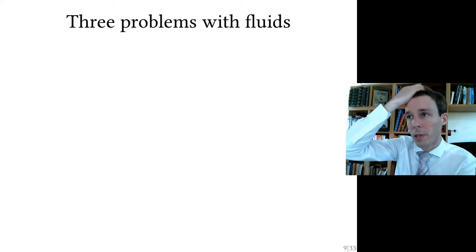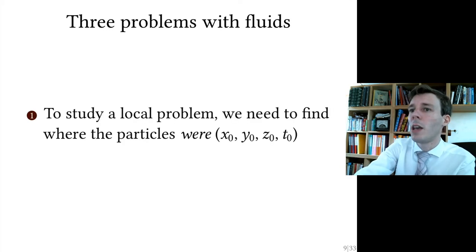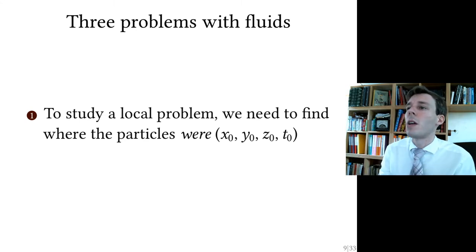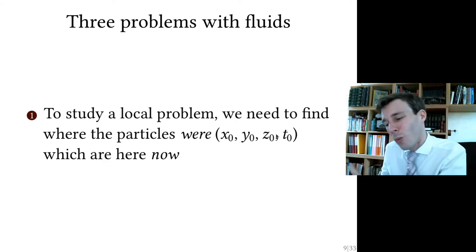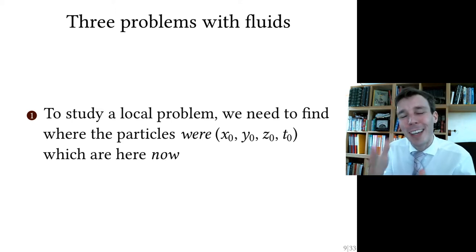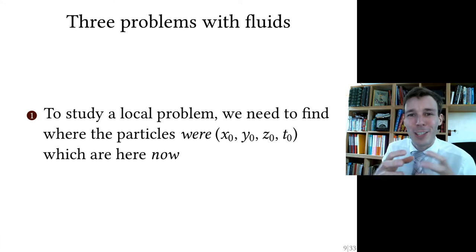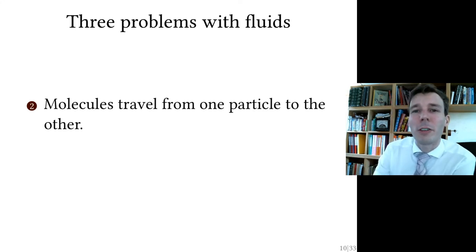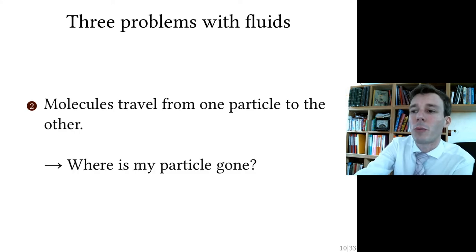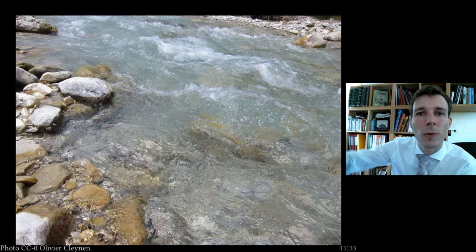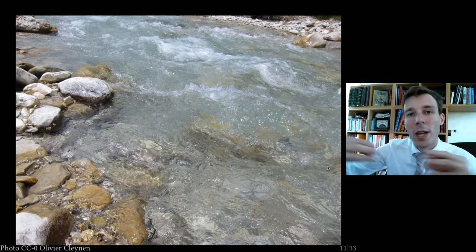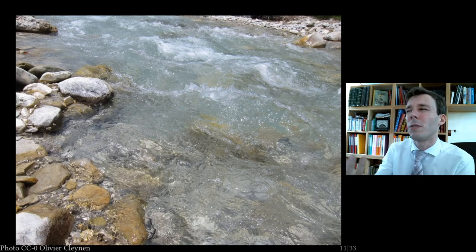So to summarize, there are three problems with using the Lagrangian tracking method. One is that to study a local problem — right behind the mirror of the car — you need to find where the particles were before, their initial point, and where those particles are now. You need a really good accounting methodology to figure out where things are going and how this changes with time. Second problem is that molecules travel from one fluid particle to the other. If you take one particle in the river flow and drop some ink, just split seconds later this ink will have spread all over because particles strain and deform as they flow down.